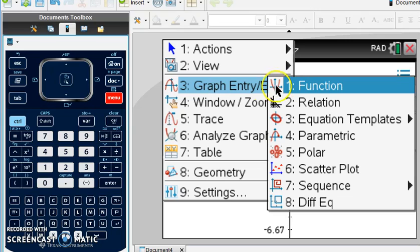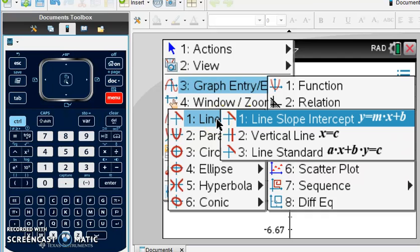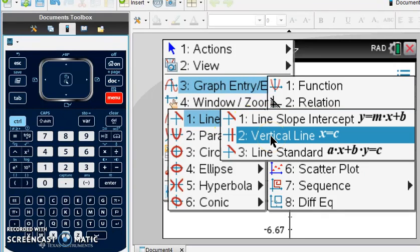Now the x equals, as you've learned in class, is not a function. It is, in fact, however, an equation of a different template. As I look under equation templates, I see an option for a line. I do know it is a vertical line. And under the option for lines, I see vertical line right there as option 2.